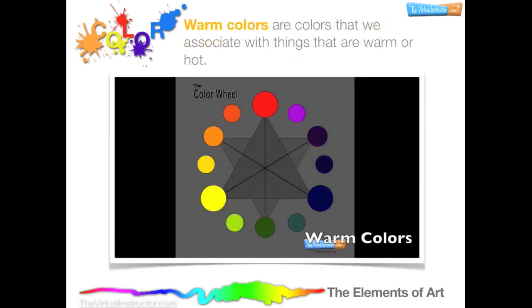Warm colors are colors that we associate with things that are warm or hot. Examples of warm colors are red-purple, red, red-orange, orange, yellow-orange, yellow, and yellow-green.